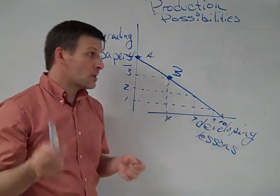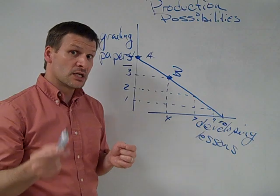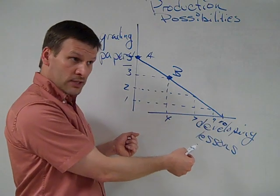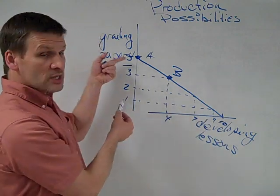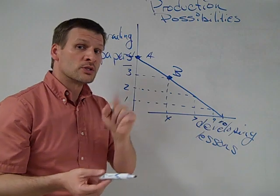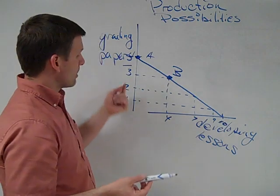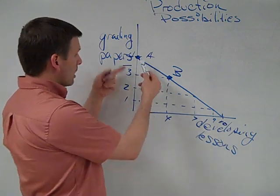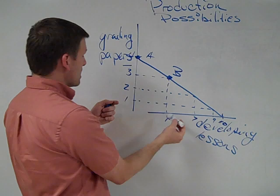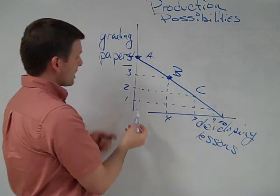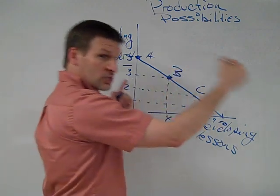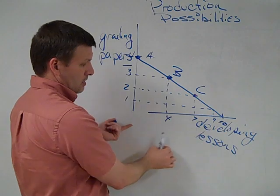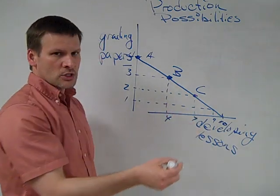What is the opportunity cost? Remember that the opportunity cost is what I've had to give up in order to make a choice. In this case, I've made a choice to develop lessons. What am I giving up? Well, in this case, the opportunity cost is one set of graded papers. I've given that up in order to produce four lessons. So we could move then from position B to position C. In this case, I've incurred an additional set of papers as an opportunity cost when I've moved from B to C. And that's actually given me three more lessons to develop. And so on and so on.